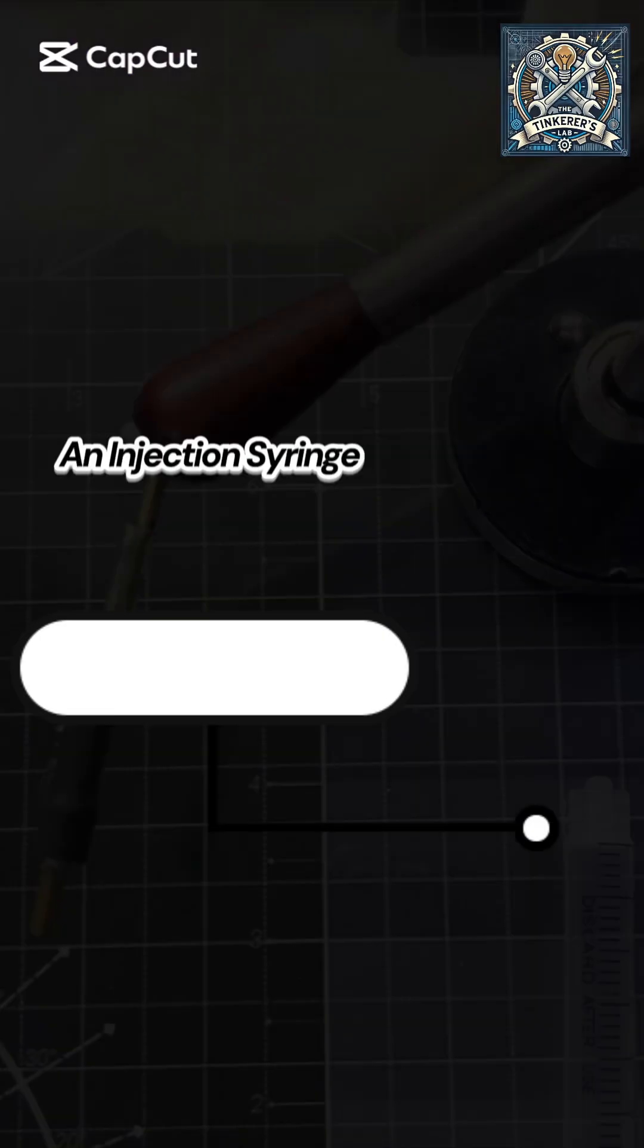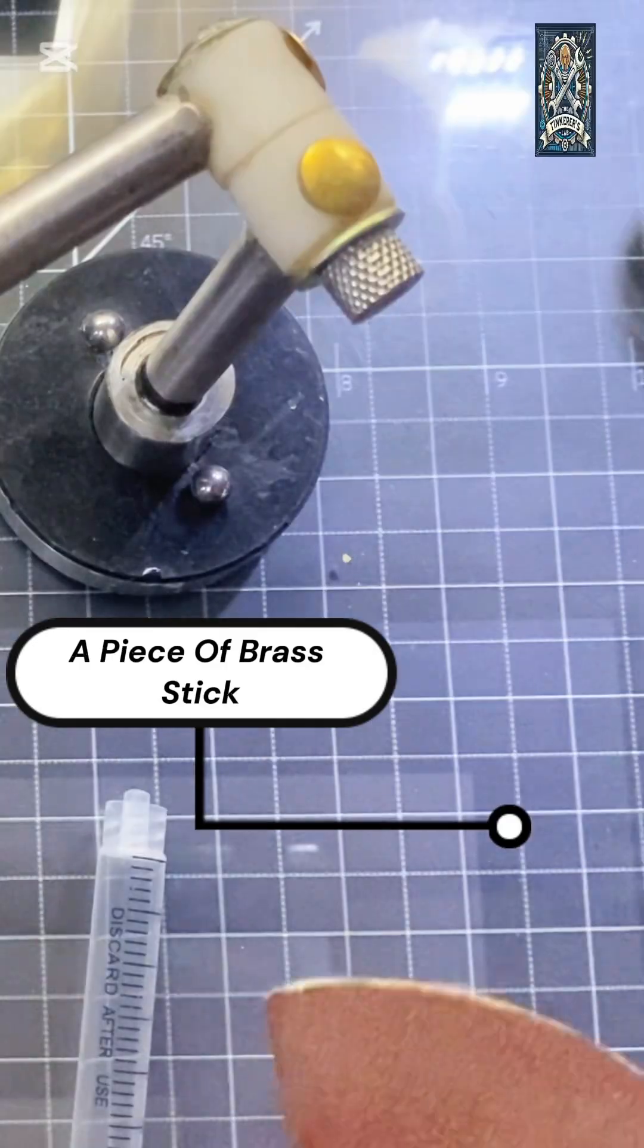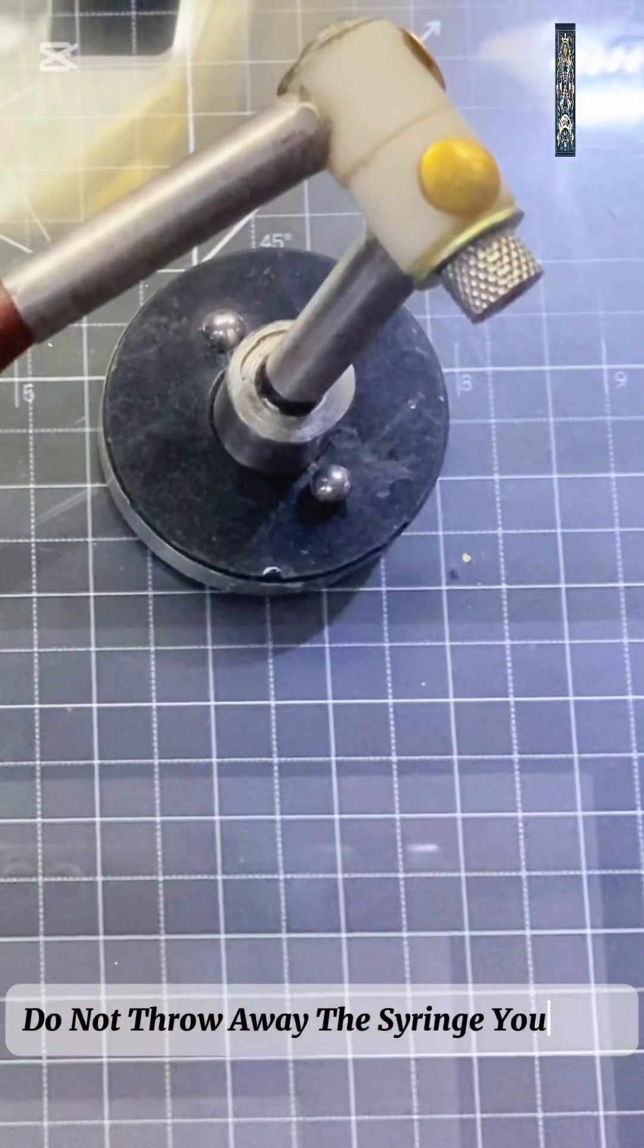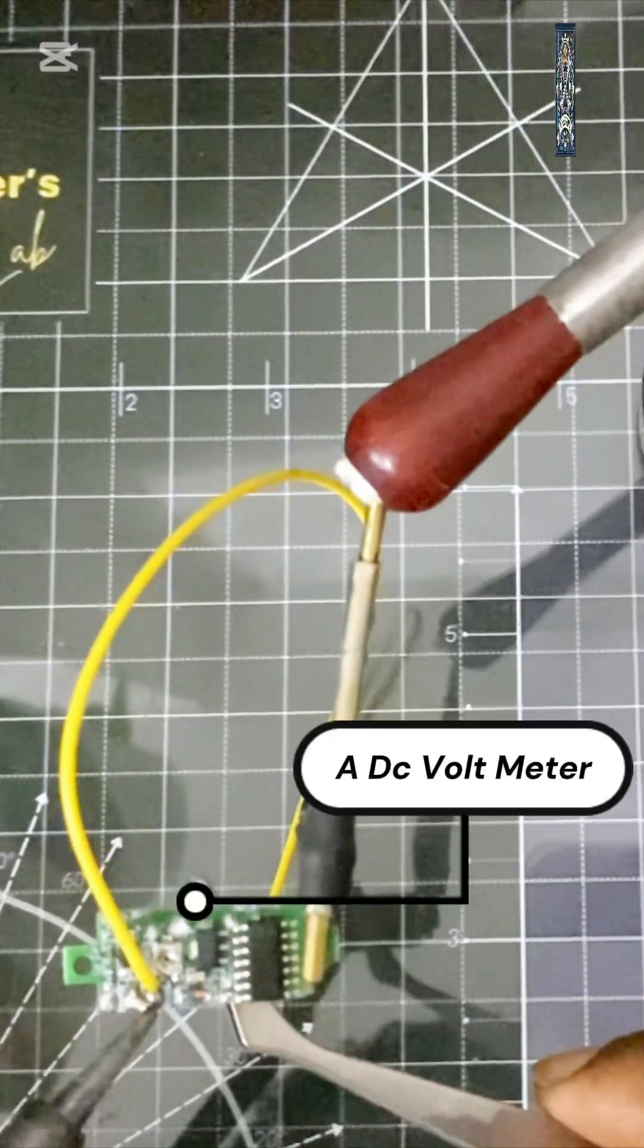Voltmeter from trash: an injection syringe, a piece of brass stick. Do not throw away the syringe you used - they can be used to make something useful, a DC voltmeter.